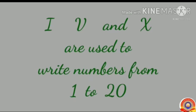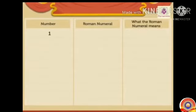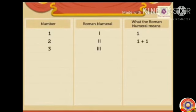How can we use these three letters to write numbers? 1 is written as I — the letter I means 1. 2 is written as II, meaning 1 plus 1. 3 is written as III, meaning 1 plus 1 plus 1. 4 is written as IV, meaning 5 minus 1.